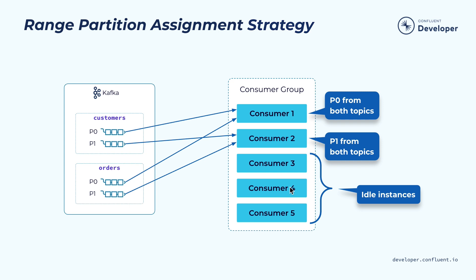The rest of the consumers will be idle because there's no work for them. Range partition has a particularly important use case — it's important for doing co-located joins. For example, you may have topics with shared keys, so all the records with the same key will be assigned to the same partition. By having the same partition assigned to the same consumer, they can easily do the joining across these two topics locally.